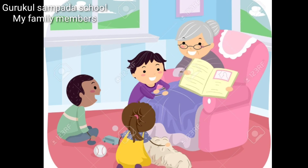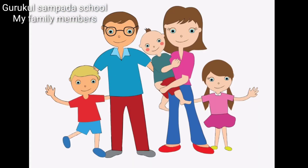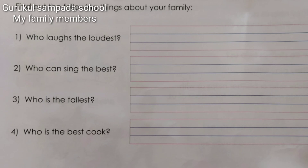Four — how each family and family member is different. Each family is different, and each family member is also different. Do you know what is special about each family member? Find out the following things about your family: Who laughs the loudest? Who can sing the best? Who is the tallest? Who is the best cook? Thank you.